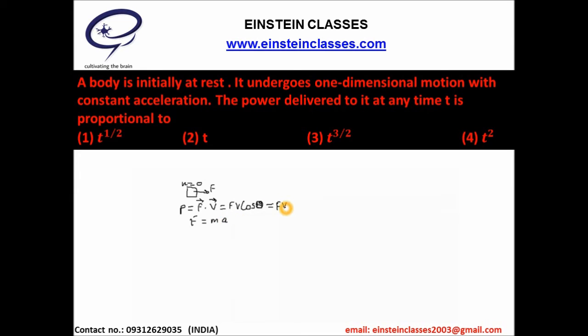Now we have to write down the value of V at any time t. From V equals u plus at, as the initial velocity is 0, this velocity will be written as a into t.